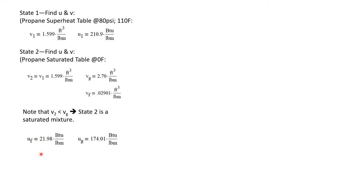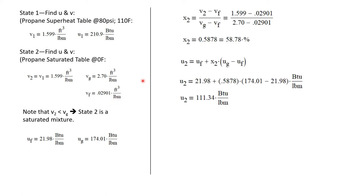So I'm going to go ahead and grab the values of internal energy from the table. U sub F is 21.98 BTUs per pound mass, and U sub G is 174.01 BTUs per pound mass. So I'm able to calculate from these values the quality at state two. It's just the specific volume minus V sub F over V sub G minus V sub F. I have all of these values from the table. And I get the quality at state two is 58.78%.